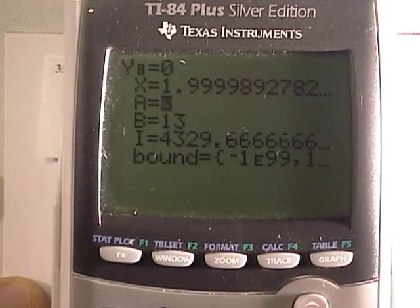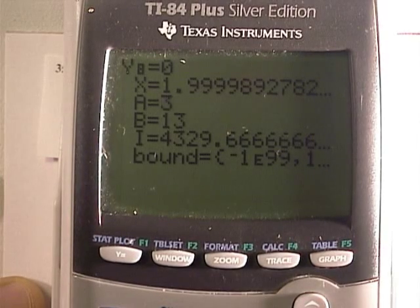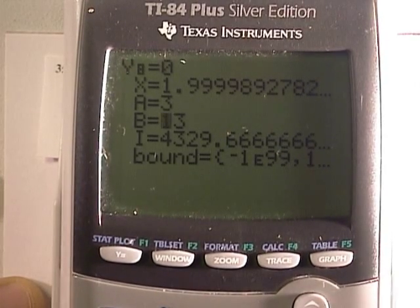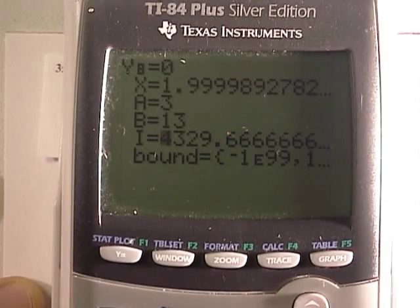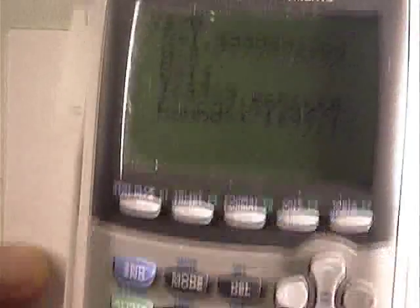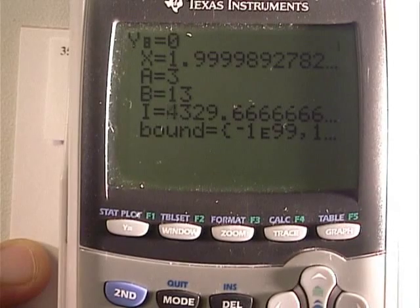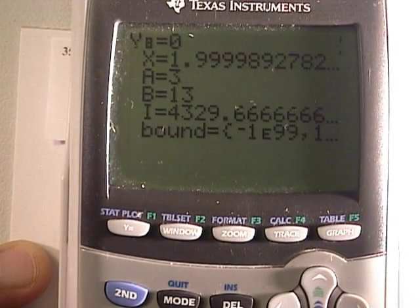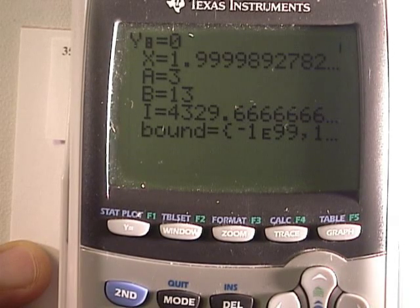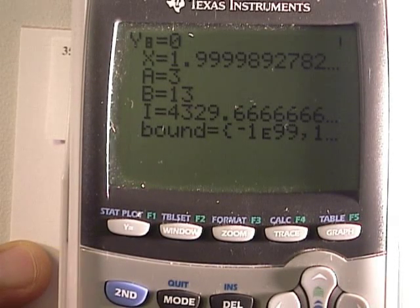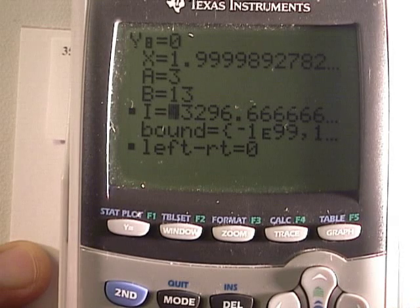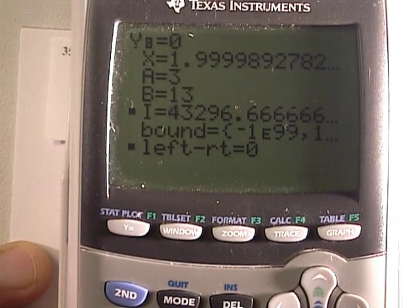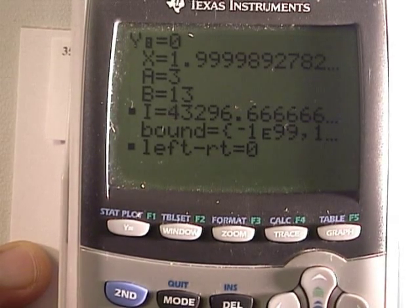So, I want to start at 3, which is 1993. And I want to go to 2003, which is 13. And then I put my cursor down on I and I do alpha. You remember? Alpha, solve. Alpha, solve. And we wait for a second. It's thinking. And now it's done. It's 43,296.